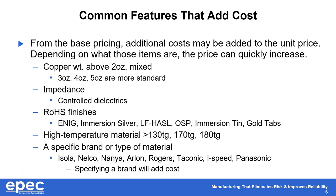High temperature materials are anything greater than 130 Tg. We see a lot of 170 Tg and 180 Tg, but not much in between. Once in a while we get a request for 150 Tg, which causes us to seek that material out to see if it would fit our process.